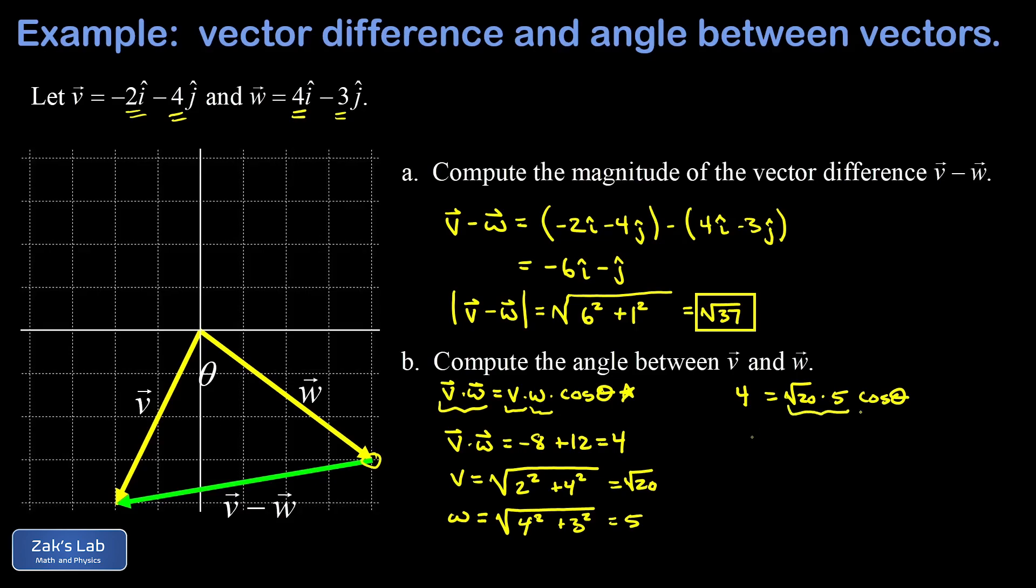We find that cos(θ) = 0.1789, keeping some extra precision for a minute. So we invert the cosine function. Theta is the angle whose cosine is 0.1789. When we run the numbers to three significant digits, we get 79.7 degrees.